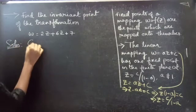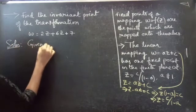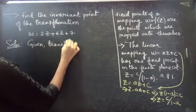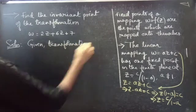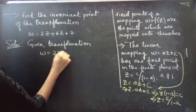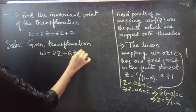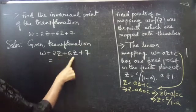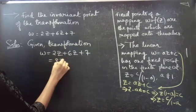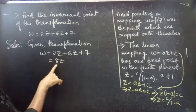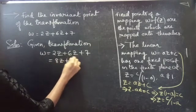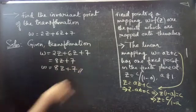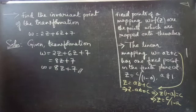So here we are given a transformation. The given transformation is W equals 2Z plus 6Z plus 7. Here you are having 2Z and 6Z, so you can add these two. 6 plus 2 is 8, so you get 8Z plus 7. So the given transformation, which is W equals 8Z plus 7, is linear.